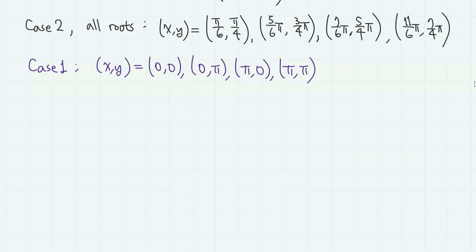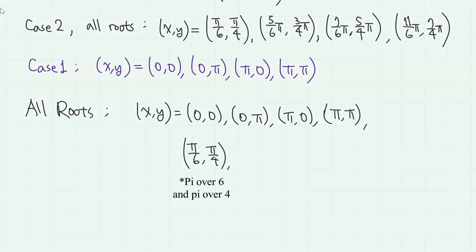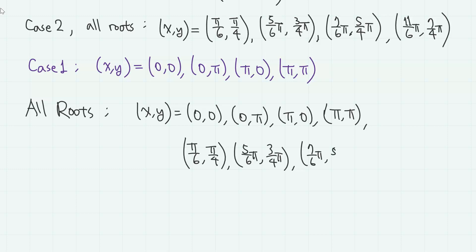Combined with the 4 pairs of roots from case 1, the complete set of roots is: (0, 0), (0, π), (π, 0), (π, π), (π/6, π/4), (5π/6, 3π/4), (7π/6, 5π/4), and (11π/6, 7π/4).